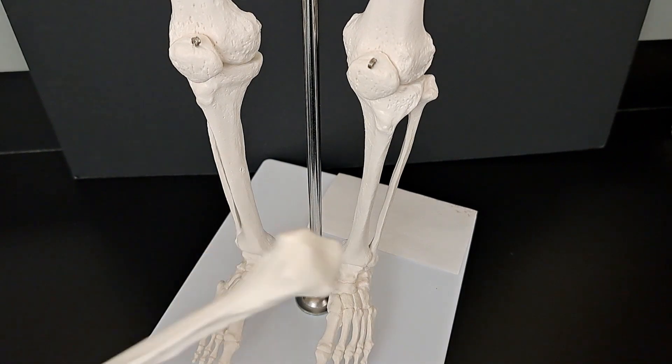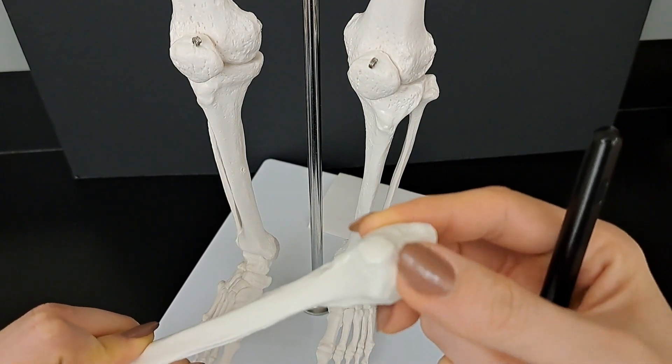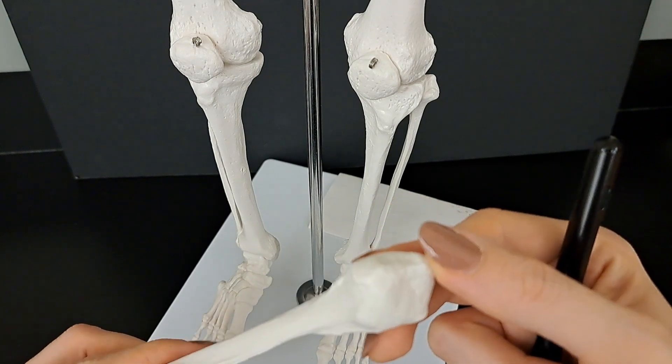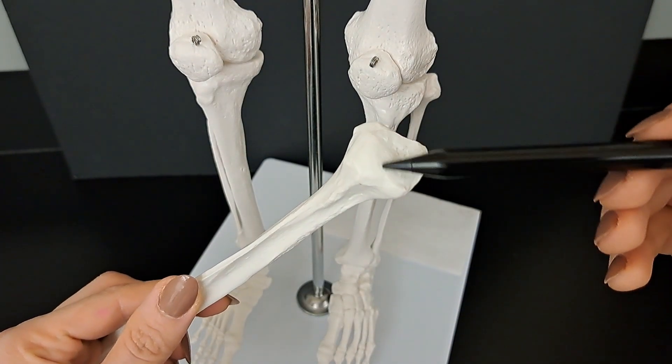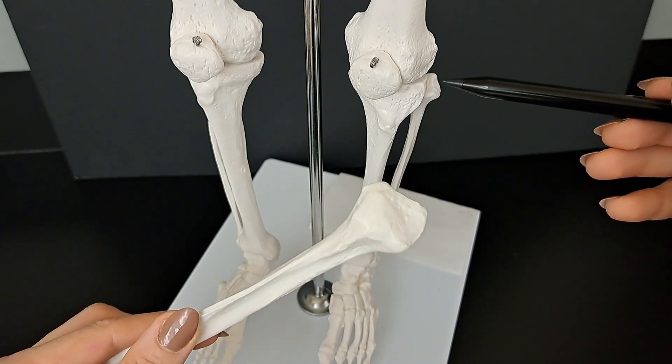And as we mentioned, the proximal end has a triangular shape. This is the tip where you have the styloid process, and it has one articular surface because of the one articulation between the two bones.